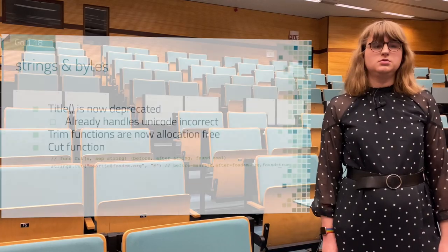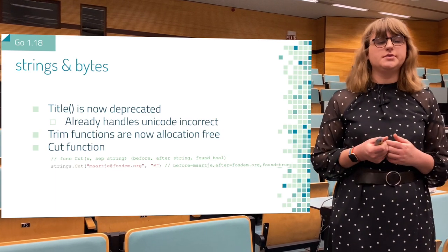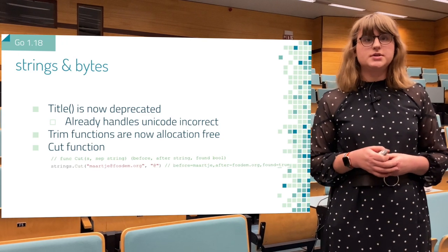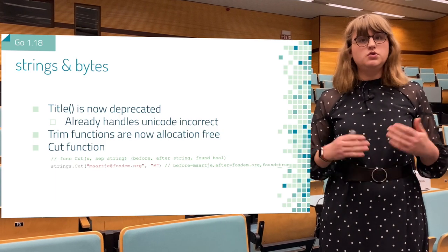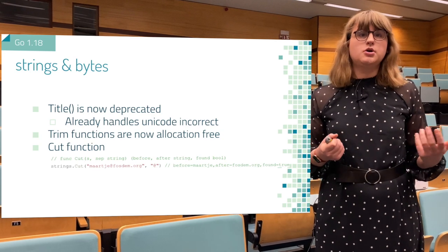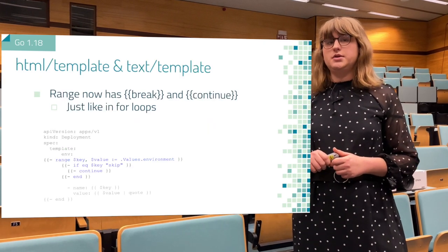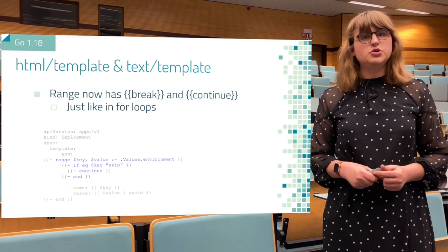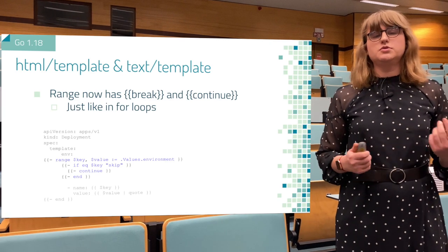We're going to talk about changes to the standard library, starting with strings and bytes. The title function is now deprecated — it already dealt with Unicode incorrectly, so it's now officially deprecated. The Trim function is now also allocation-free, making it faster and using less memory. There is also a new Cut function which allows you to cut a string or a slice of bytes in two parts by finding a separator — this was previously done by combining several functions of the package. There is also a new addition to Go templating: in HTML and text templates, ranges can now have breaks and continues, just like you would do in for loops in Go.